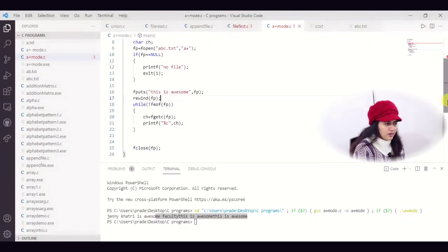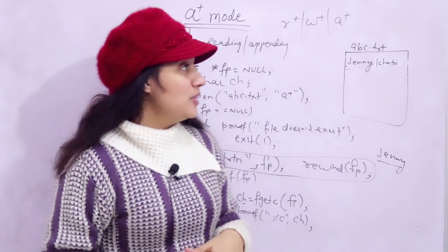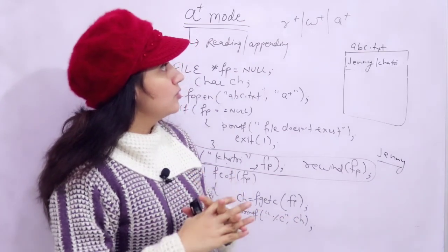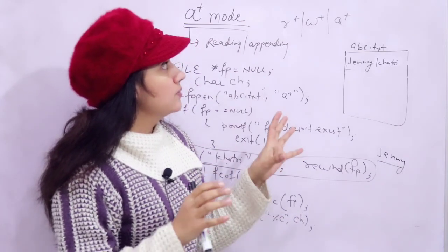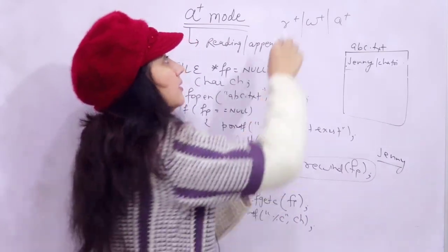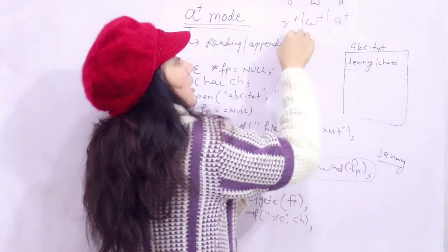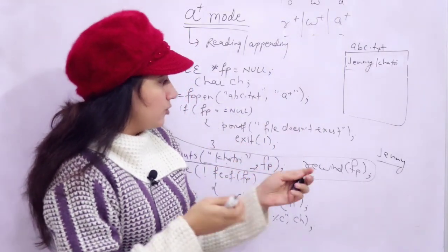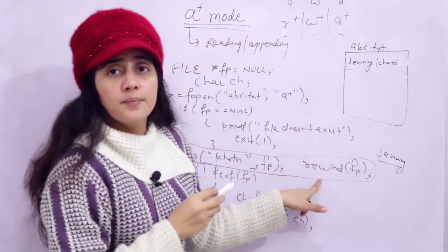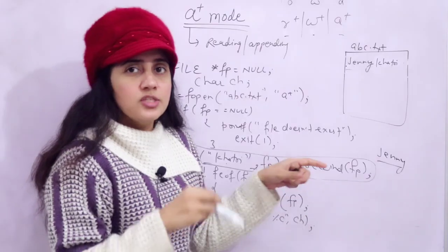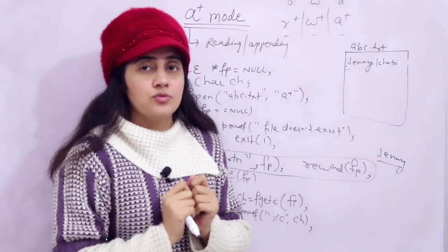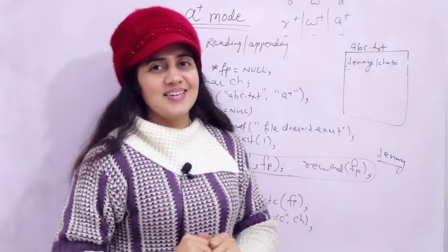So now A plus mode should be clear. We have now discussed all six file opening modes: read, write, append, R plus, W plus, and A plus. We are left with some special functions like rewind and fseek, which we will discuss in the next video. See you in the next video. Bye bye, take care.